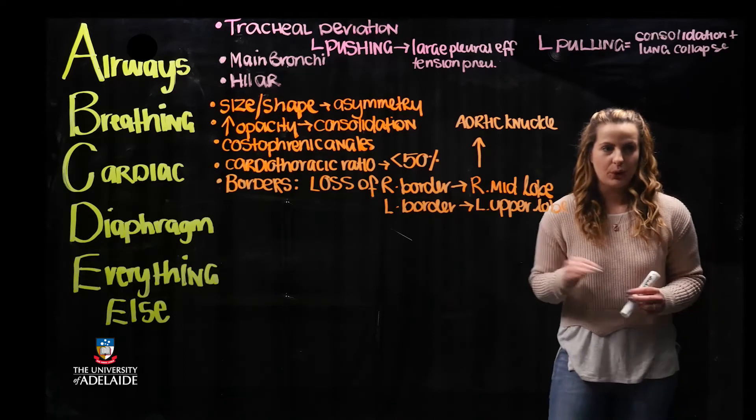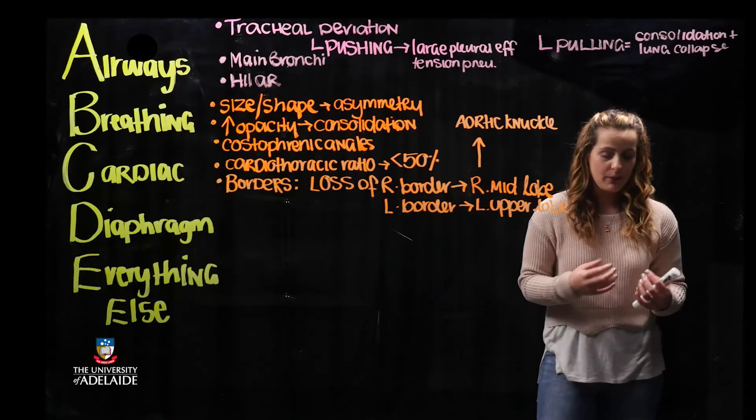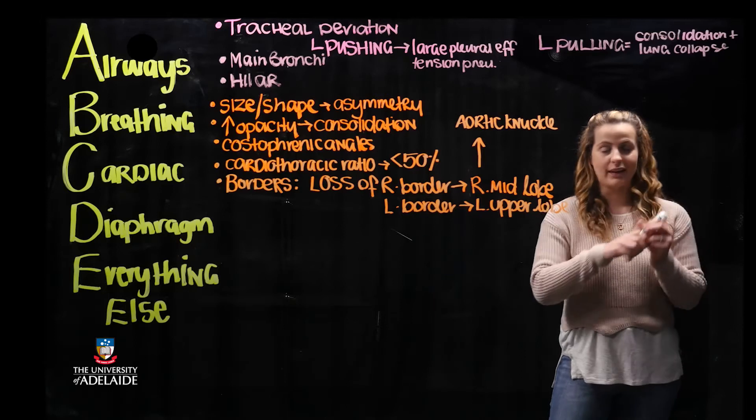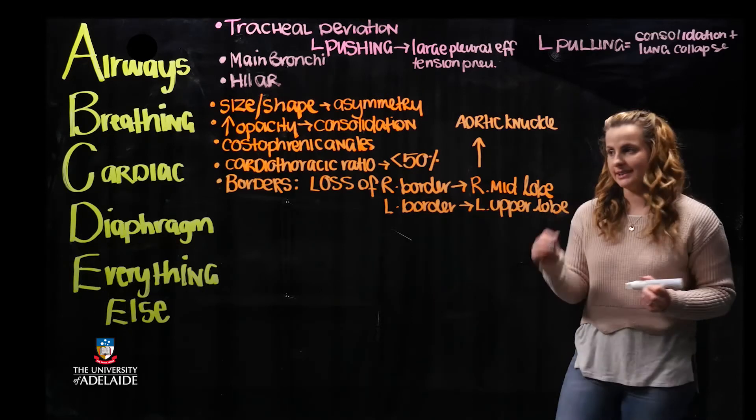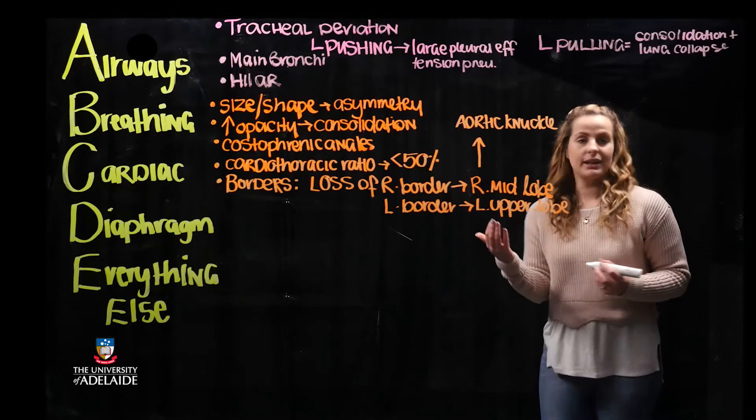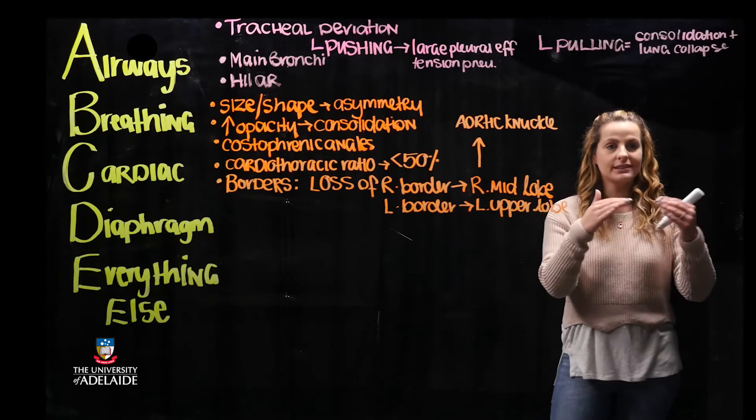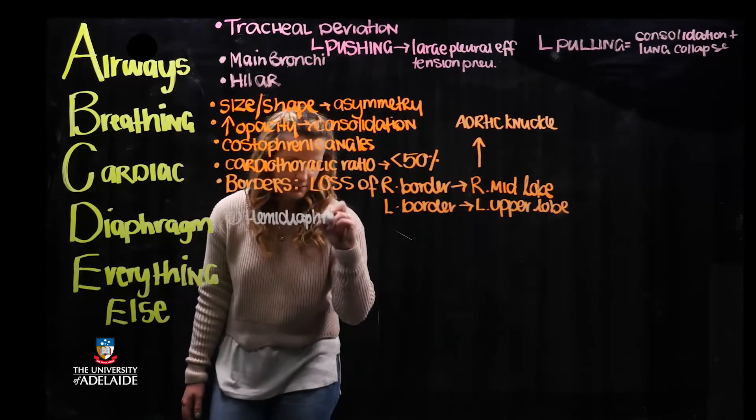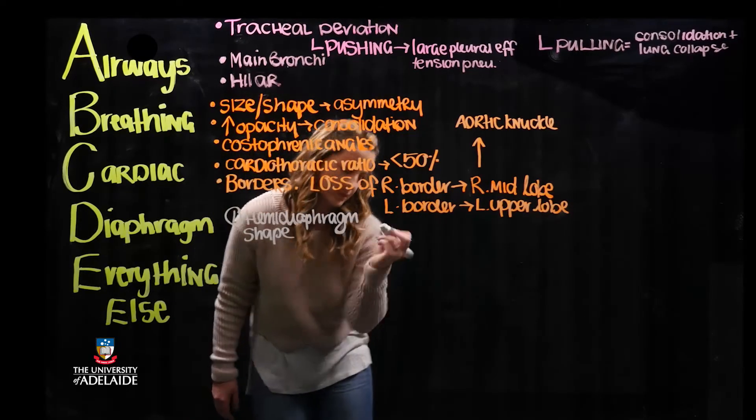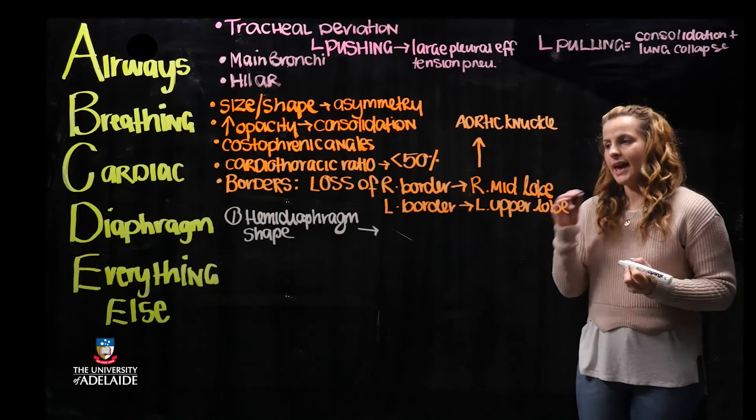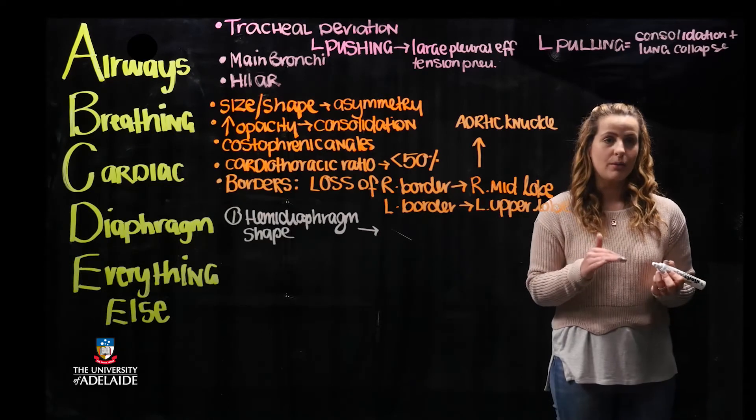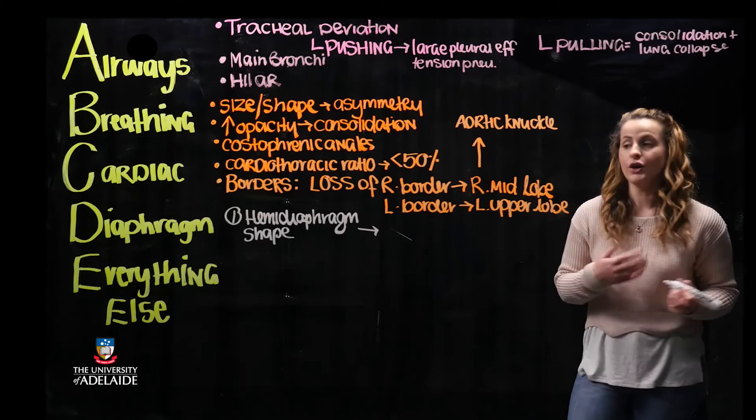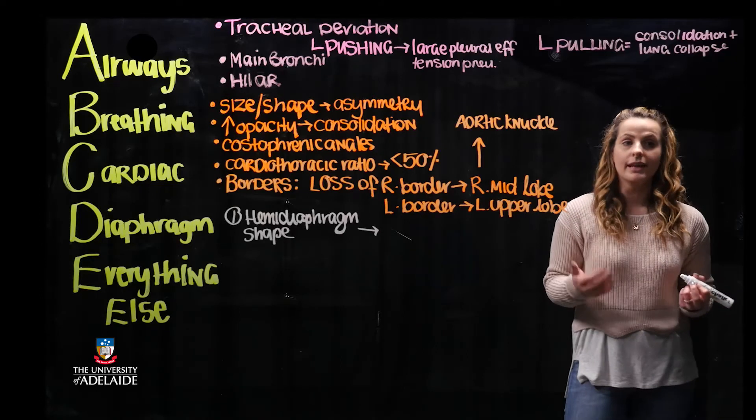Our fourth point, when looking specifically at the diaphragm, we're looking at the hemidiaphragm—the summits of each dome of the left and right diaphragm. The first parameter we're looking at is tracing the shape of the diaphragm from lateral to medial. If you cannot see the hemidiaphragm on the left side, this is indicative of consolidation associated with the left lower lobe.